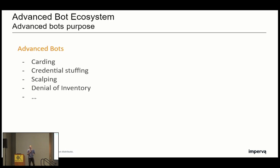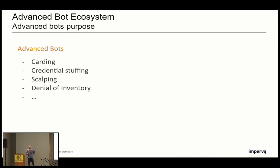What's the purpose of advanced bots? Advanced bots can be used for carding — checking credit card numbers found on the dark web and testing them against e-commerce websites. Credential stuffing — taking combo lists of usernames and passwords found on the dark web and testing them against a large range of e-commerce websites to find a match. Scalping — purchasing large amounts of limited edition items from e-commerce websites to resell them at a higher price. This damages the reputation of target websites and generates long-term revenue loss. And denial of inventory — making an e-commerce website almost unusable via the massive usage of dummy carts.